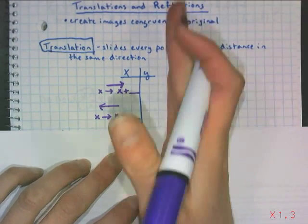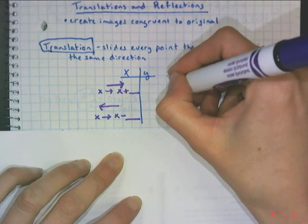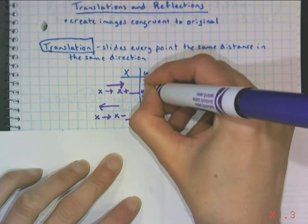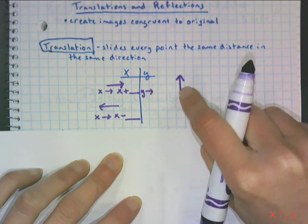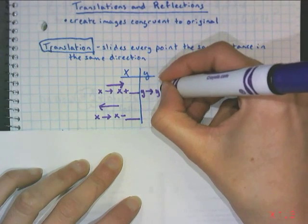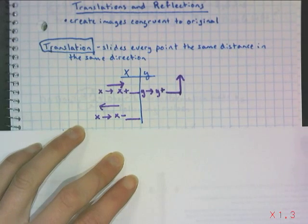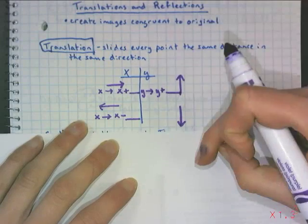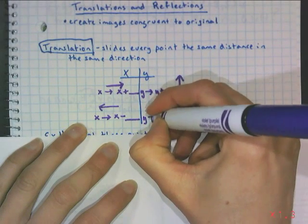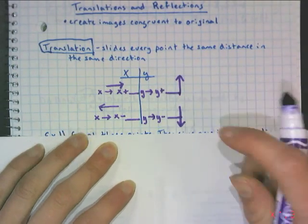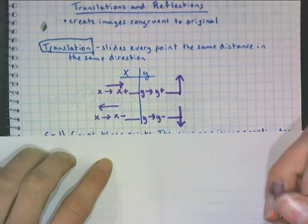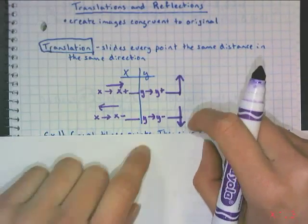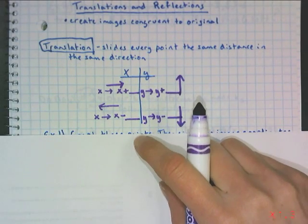For Y, the Y-axis is vertical — it goes up and down. Going up means adding to Y, because you're moving in the positive upward direction. Going down means subtracting from Y. So: going up, add to Y; going right, add to X; going down, subtract from Y; going left, subtract from X.